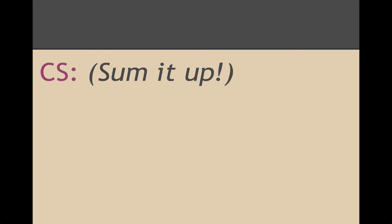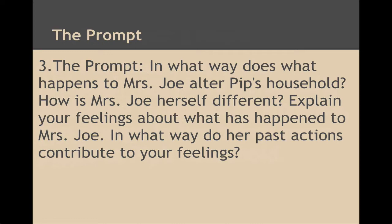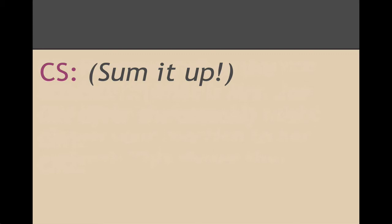And then finally you have a concluding sentence. When you're ready to write your concluding sentence, you want to go back and look at everything that you've written and also go all the way back to the prompt. Is there something in this prompt — perhaps that last sentence, 'in what way do her past actions contribute to your feelings?' — that may be a way to sum it all up. Because she was such-and-such before the attack and so-and-so after the attack, you know, you might say 'I feel much more sympathetic towards her' or 'I feel that Pip has been blessed with more peace,' or whatever you want to say. Just make sure that you are answering the prompt when you're ready to write that final concluding sentence.